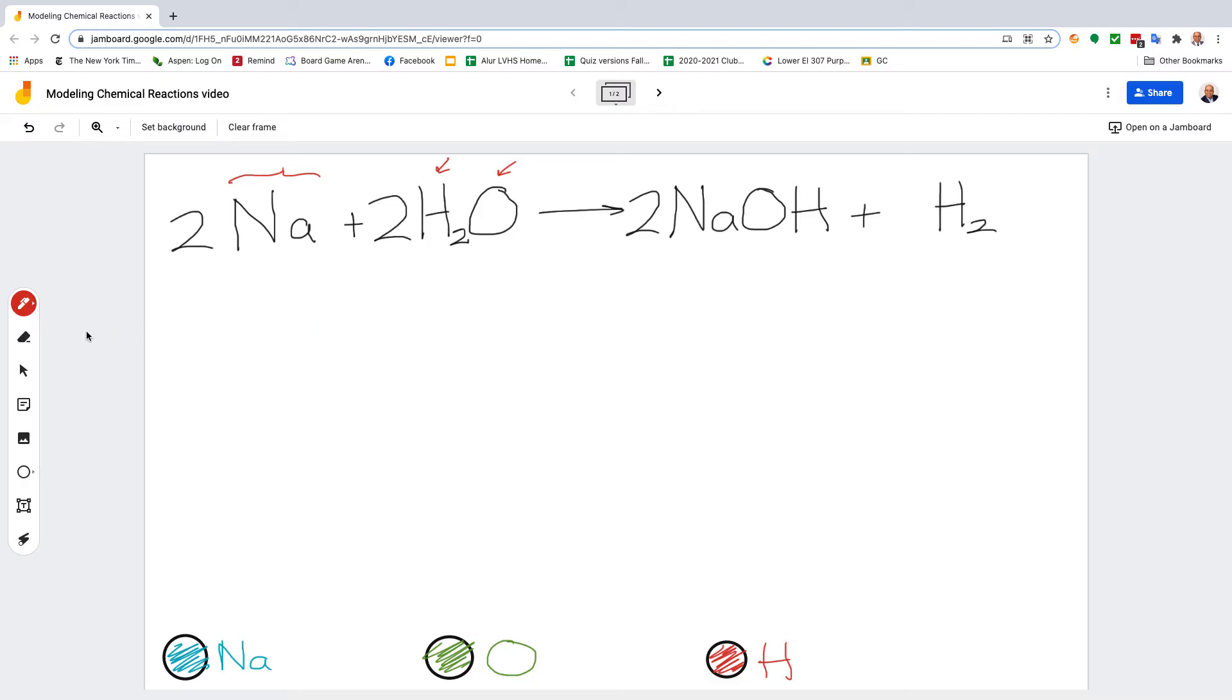First we're going to model the Na's. Notice these numbers in the front—they're called coefficients, and these coefficients tell you how many of this particle there are. It's multiplication, so it says there's two of Na.